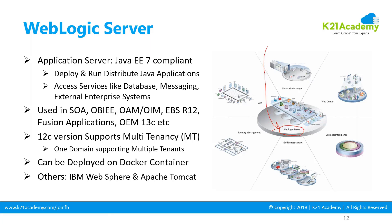There are a lot of application servers out in the market, but the top three are Apache Tomcat, followed by WebLogic, and then IBM WebSphere. These are the three main players in the application server space — the most common implementations.